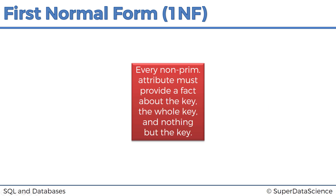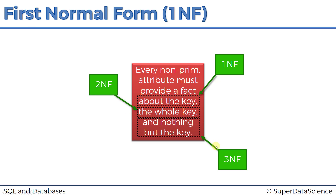Now hopefully that's ingrained in your mind forever. Let's understand why this is actually helpful. If you look at the three different parts: 'about the key' is associated with the first normal form, 'the whole key' is associated with the second normal form, and 'nothing but the key' is associated with the third normal form. These hints will help you recover in your mind the criteria for each one of these normal forms at any point in time — that's why this mnemonic is useful.